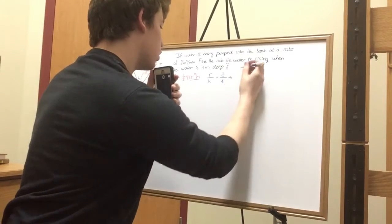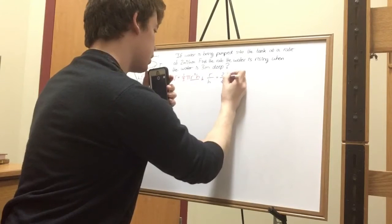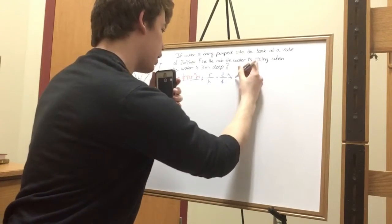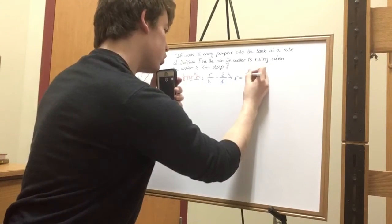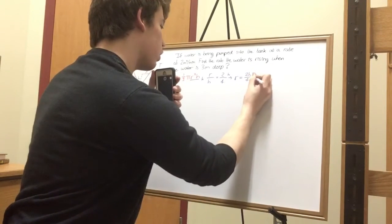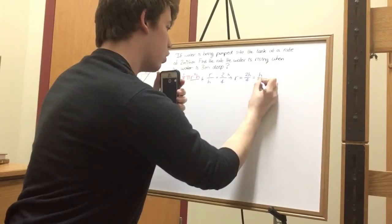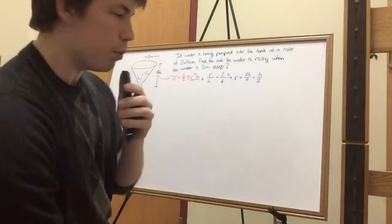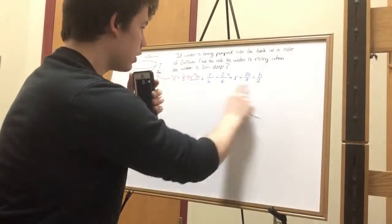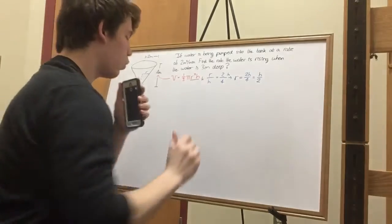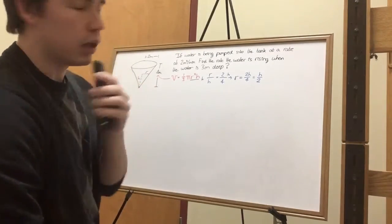times h, times h. We will find that r will equal to h over four, which will reduce to h over two. Cool beans, alright? So we want to plug this r into this equation so we can then properly derive it and solve.